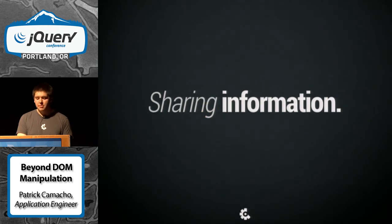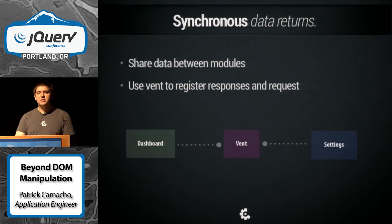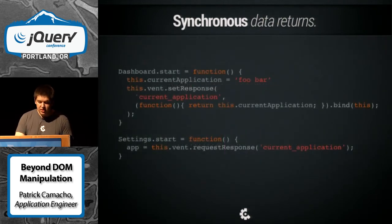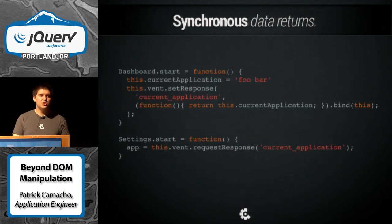The last big piece was about sharing information. One great thing about events is they can fire off specific functionality without any shared knowledge of what's going on, but it's more difficult to actually communicate information between different moving parts. We didn't want to add an entirely new mechanism, so we decided that the easiest answer would be to register responses and request data through the same vent. This gave us synchronous data returns: through the vent we could set responses with a given key, and likewise request that response. The dashboard application on start would register what the current application is, and the settings module when loaded would request that data without going back to the server.